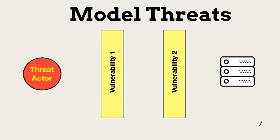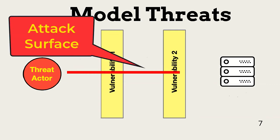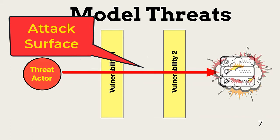Threat modeling requires understanding how each threat makes its way to its target. Once that's known, the team steps through the expected threat path to identify vulnerabilities. When designing a system, this is a process of identifying the attack surface. A threat actor usually has to compromise multiple vulnerabilities to reach its target. A layered approach needs requirements to address two or more of the attack surface weaknesses.